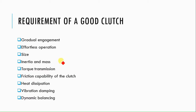A good quality clutch has certain basic requirements. A clutch should have the property of gradual engagement — it should not engage the power suddenly, but gradually connect the driving shaft to the driven shaft. The operation of the clutch should require very less power, meaning pressing the pedal should require very little effort. The size of the clutch should be minimum so it can be accommodated in any engine. There should be minimum inertia, because after disengaging the clutch, due to inertia the clutch should not run idly. The mass should also be lower.